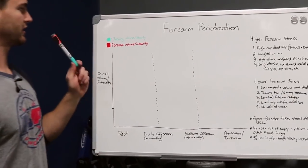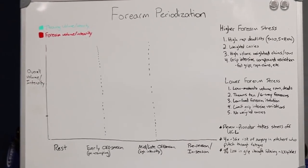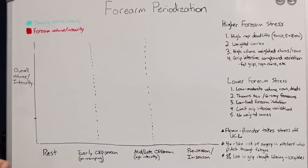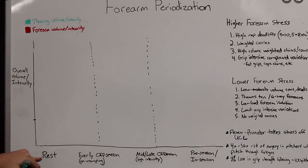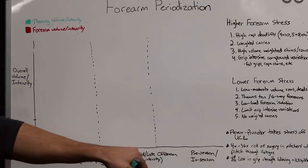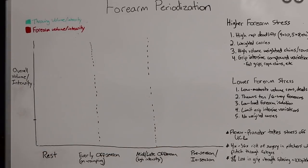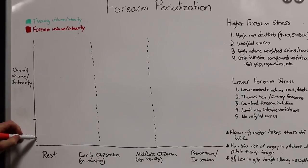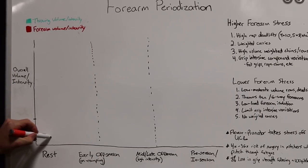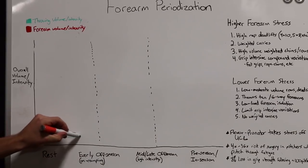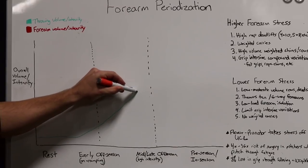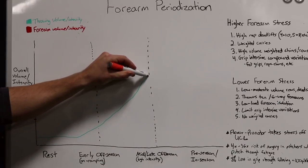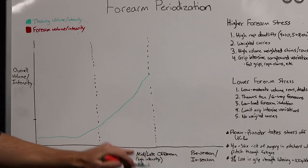So I'm going to take you through what that looks like. We're looking at throwing volume and intensity related to forearm or grip training volume and intensity. So we're going from rest, early off-season, mid to late off-season and pre-season slash in-season. Throwing volume and intensity is going to start basically zero here during rest phase. As we get into on-ramping, it's going to increase. Throwing volume keeps increasing as we build up. We're going to get into mid to late off-season. We're going to be in a very high intensity phase at this point.